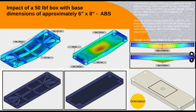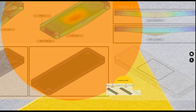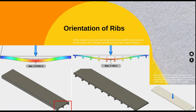It is also important that the orientation of ribs be considered with respect to the loading condition. Comparing a first design and second design with ribs in horizontal and vertical directions, the second design shows more deflection because the ribs are not oriented in the right direction, while the first design has lesser deflection. This must be considered while arranging the ribs when designing a plastic component.